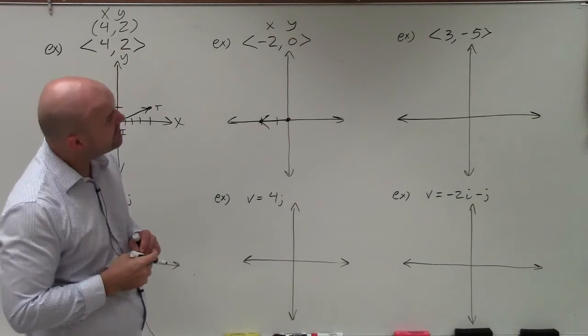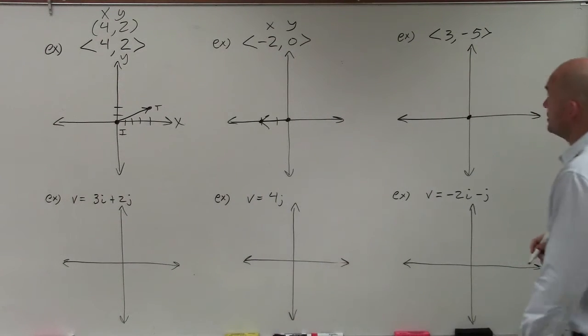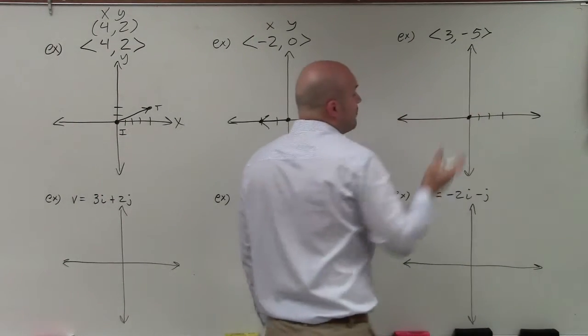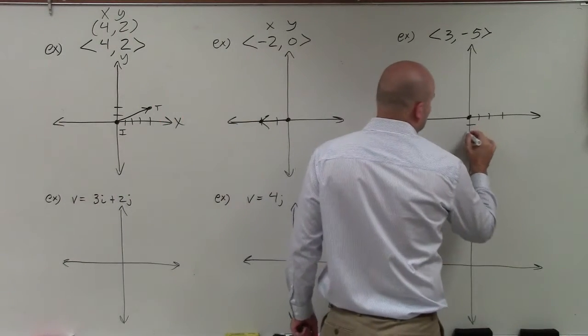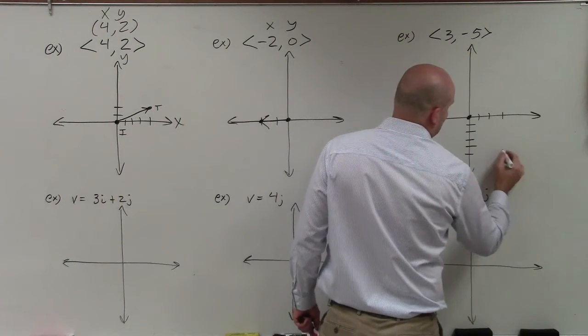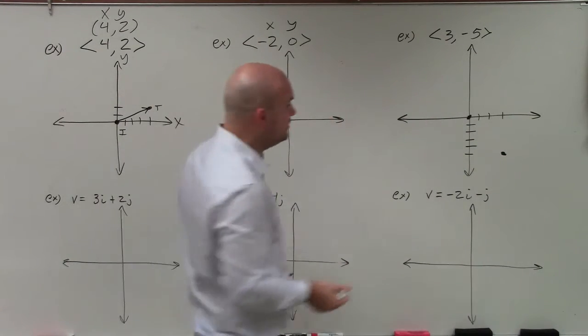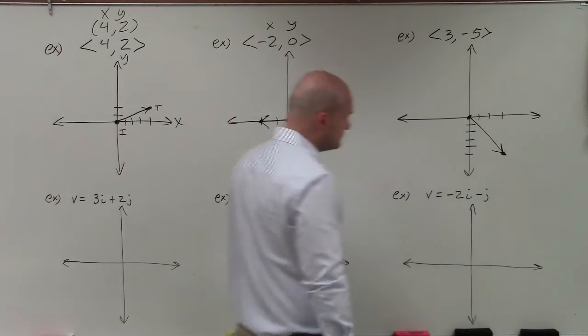Over here, I have (3,-5). Again, just start at (0,0) because it's in component form. Then I'm just going to go to the right 3: 1, 2, 3. And then now, since the y-coordinate is negative, I'm going to go down 5: 1, 2, 3, 4, 5. That's my coordinate point, 3 comma -5. However, again, we're doing a directed line segment. So there you go.